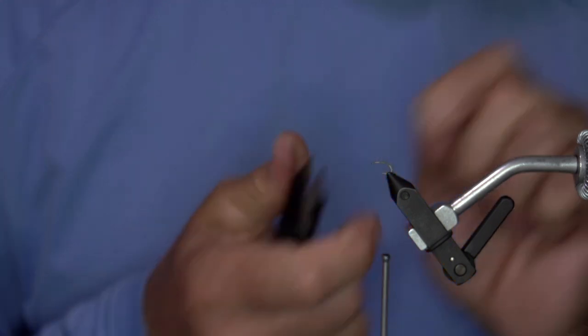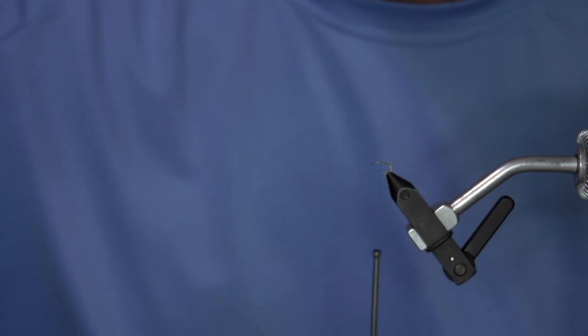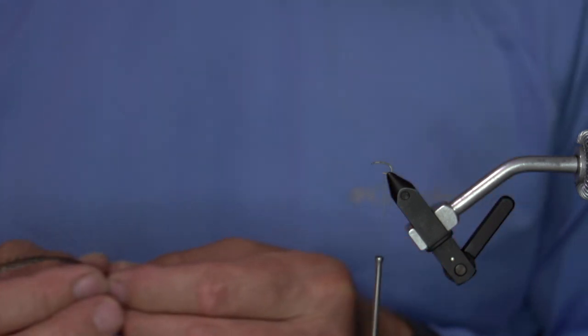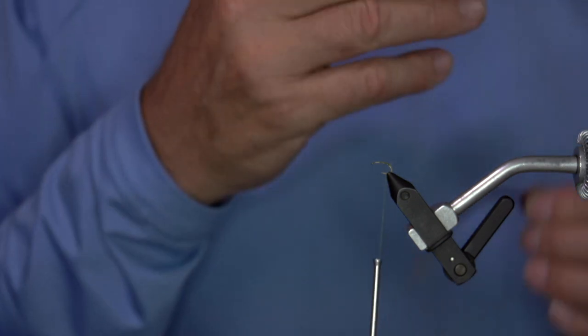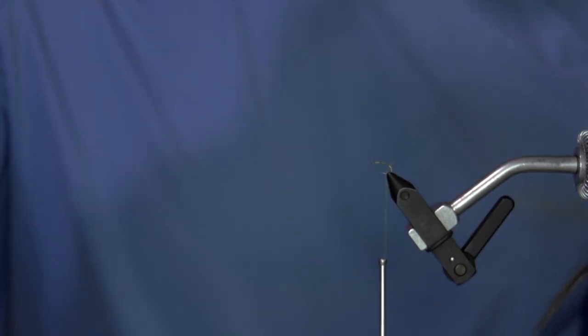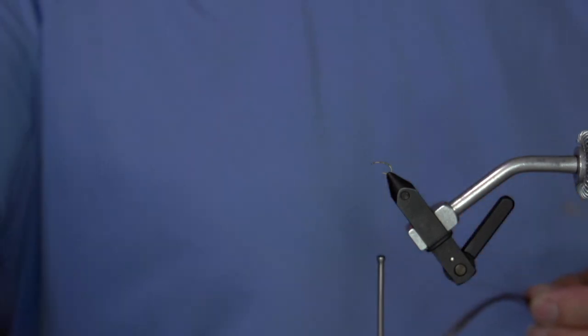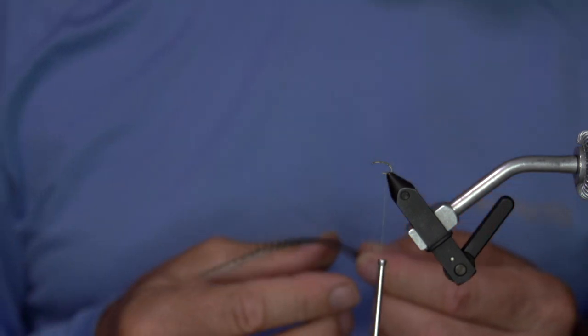So wrap back. Remember the key when tying an emerger is you're really tying two different phases of the bug's life. You're tying the nymph phase which is going to hang underneath the film, and you're also tying the adult or dun phase as it's hatching out of the shell. So you've got to think about both of those while you're tying these emergers.